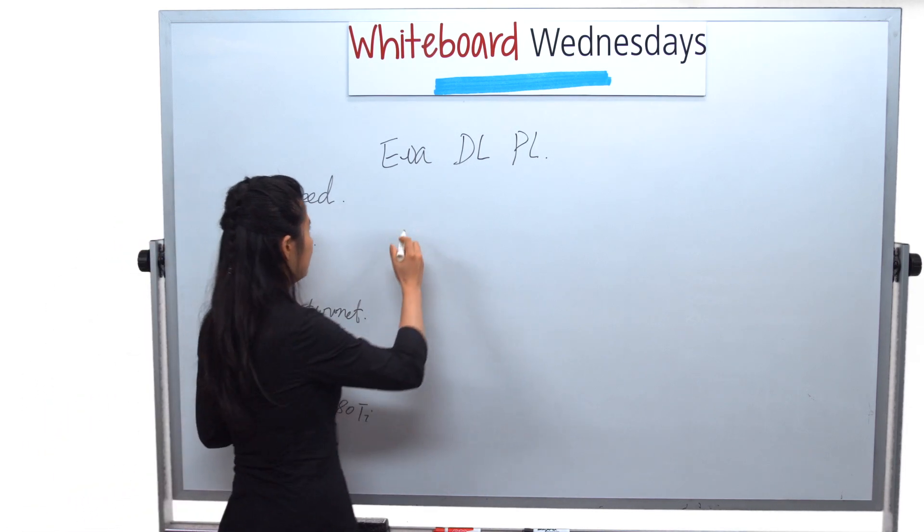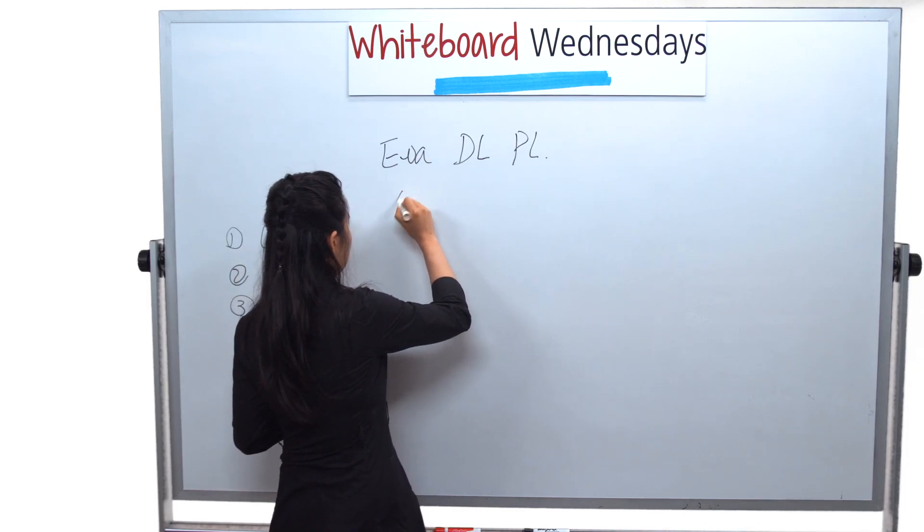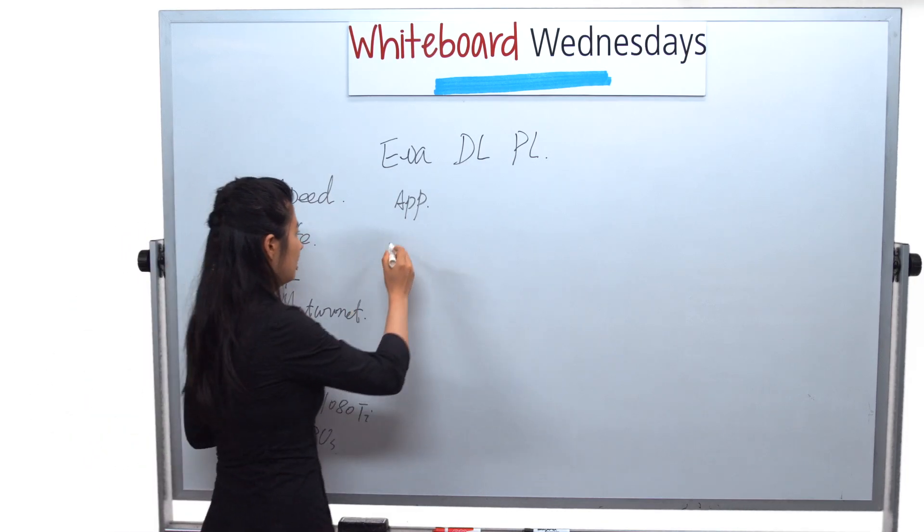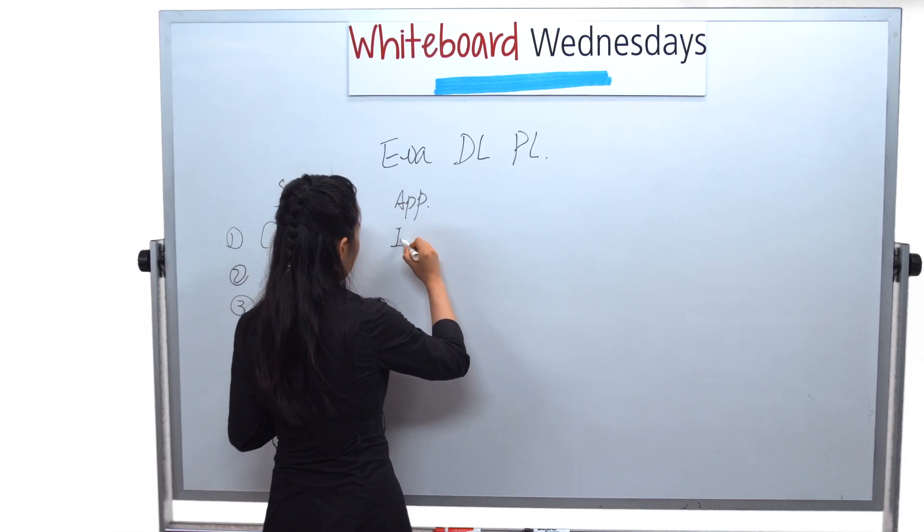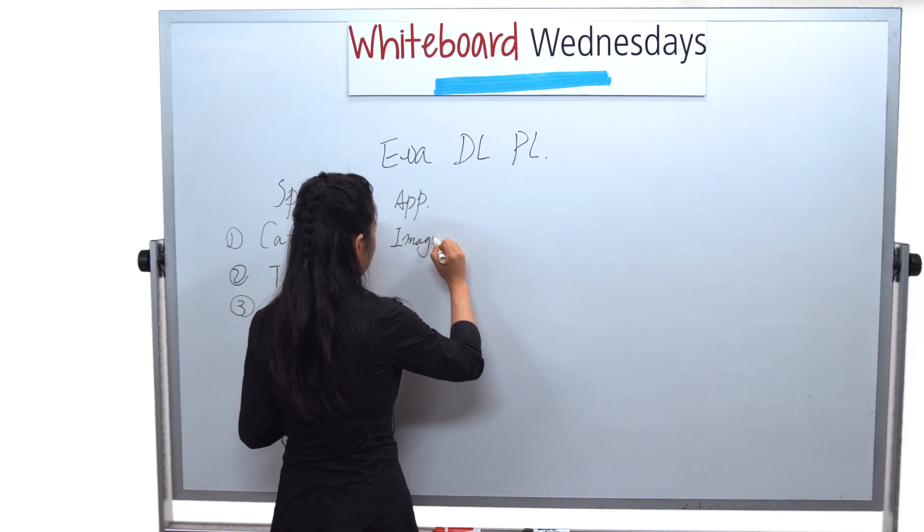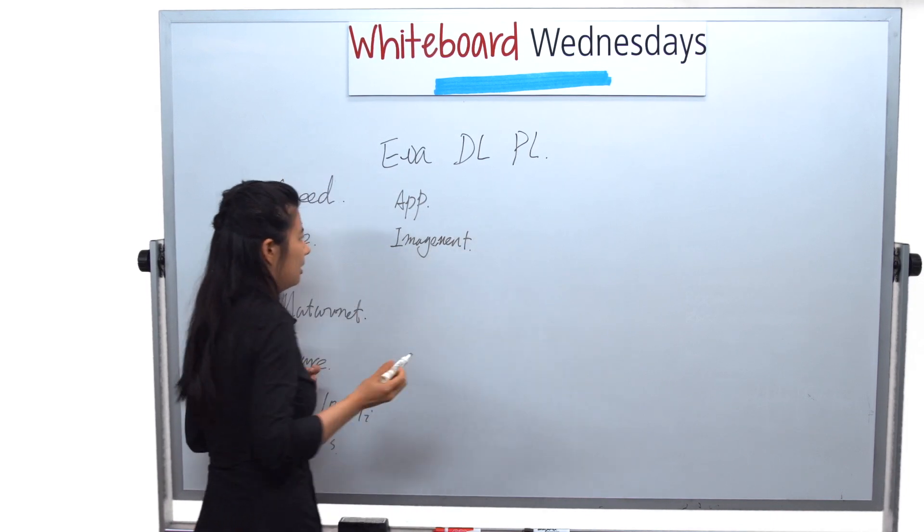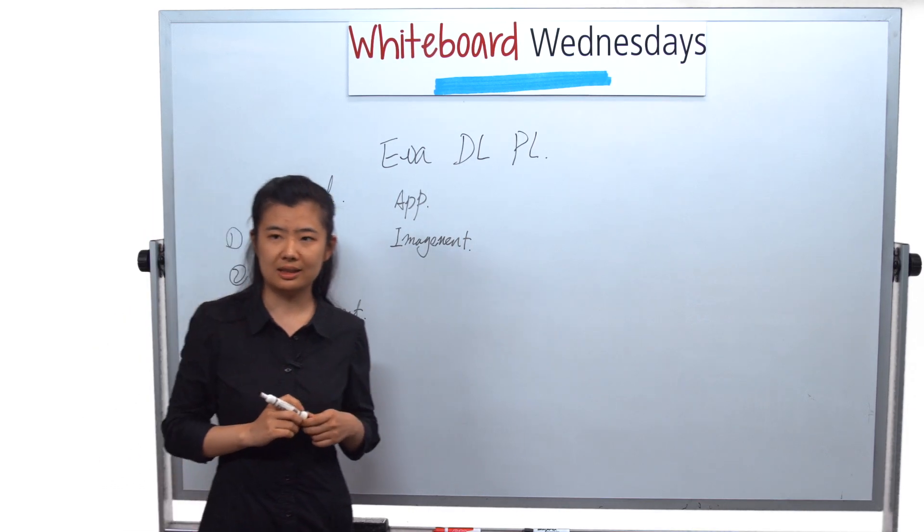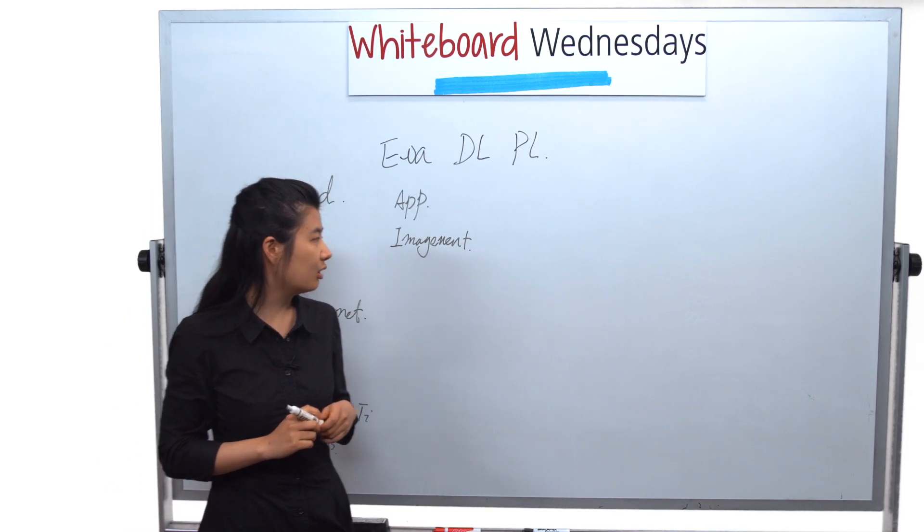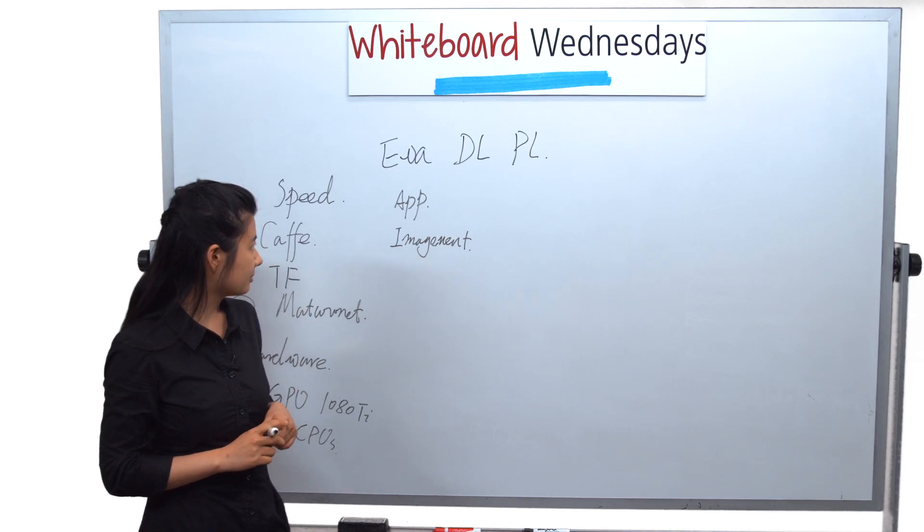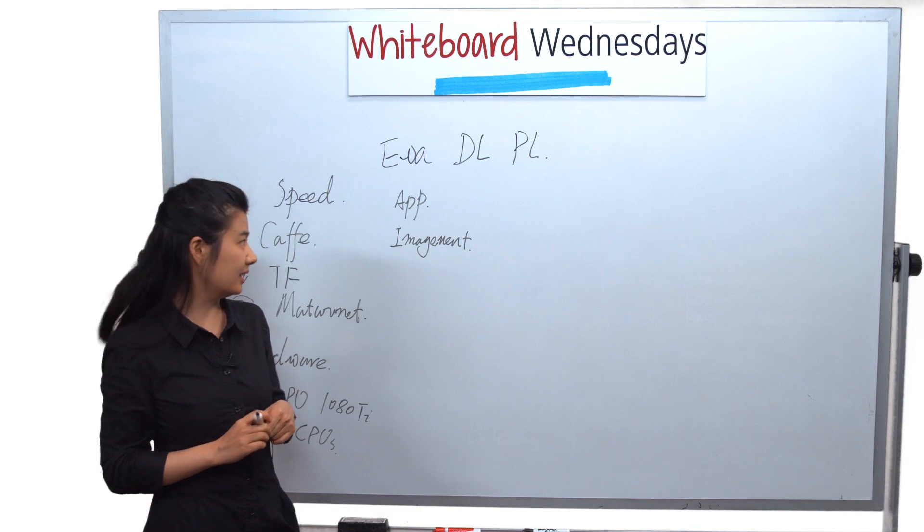So after that, we select to use image classification as the application. As deep learning has done a very good job in image classification, we employed the very famous ImageNet as our testing data. It collects over 1,000 classes of images, and we did the test based on that.